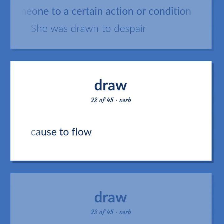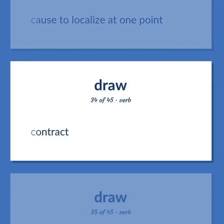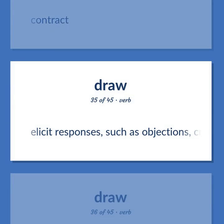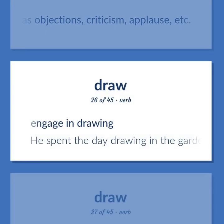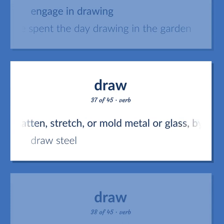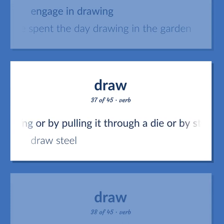Cause to flow. Cause to localize at one point. Contract. Elicit responses, such as objections, criticism, applause, etc. Engage in drawing. He spent the day drawing in the garden. Flatten, stretch, or mold metal or glass by rolling or by pulling it through a die or by stretching. Draw steel. Move or pull so as to cover or uncover something. Draw the shades. Reduce the diameter of a wire or metal rod by pulling it through a die. Draw wire.